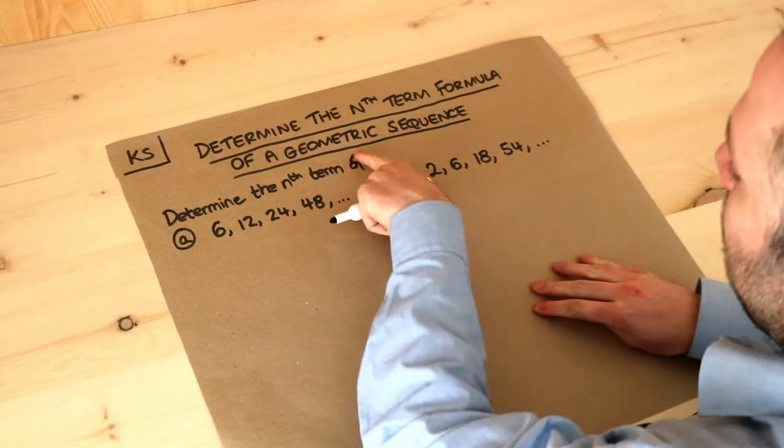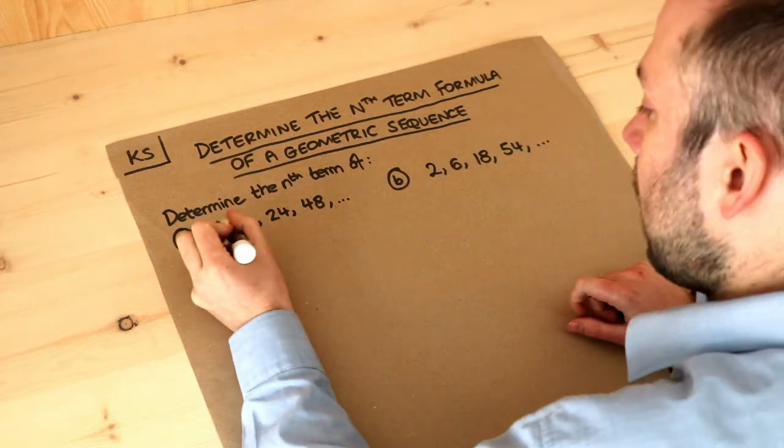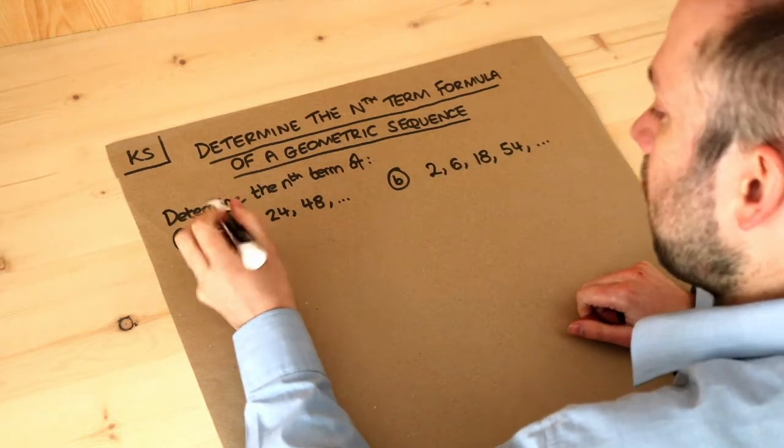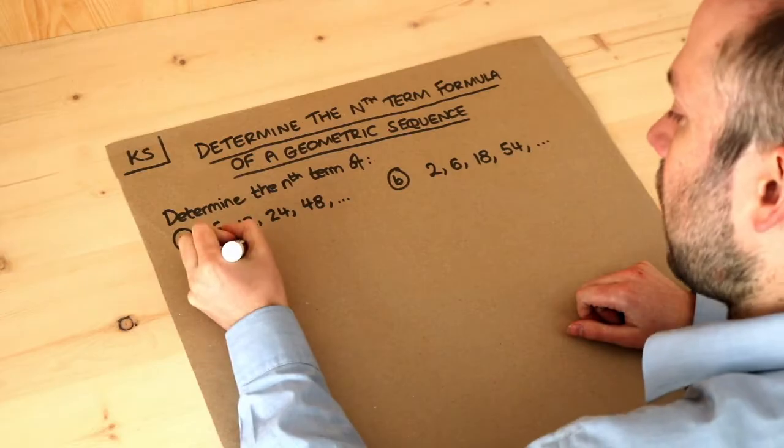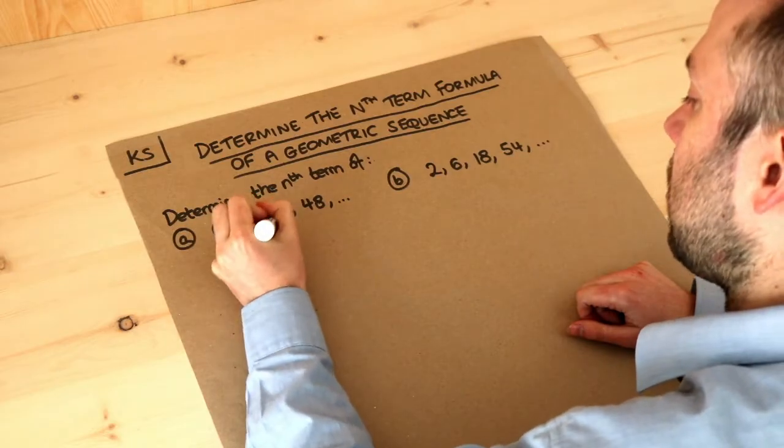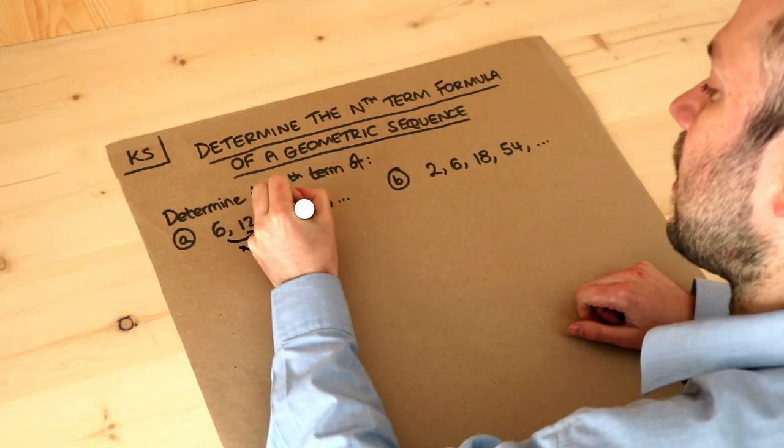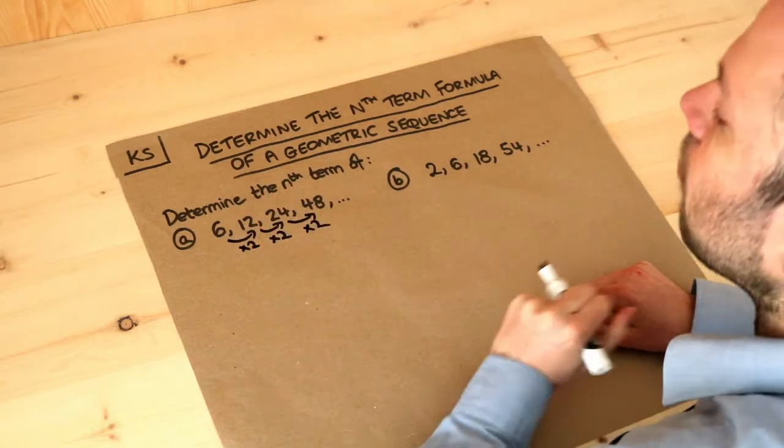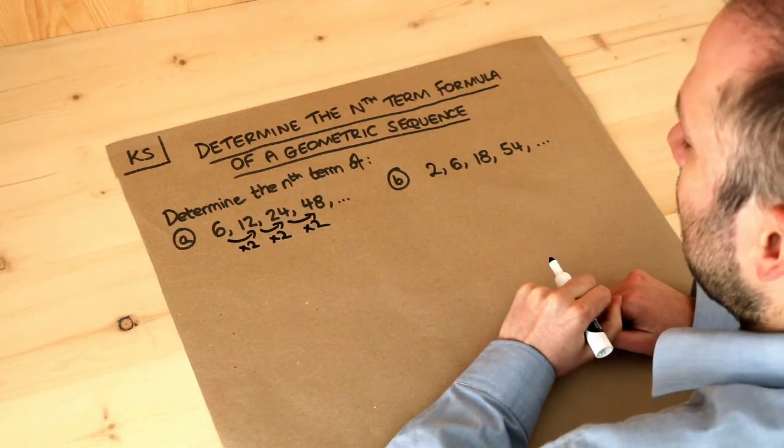What makes a geometric sequence is that we're multiplying by the same value each time. You can see this is doubling each time, times by 2, times by 2. If you were adding or subtracting the same number each time, that's known as an arithmetic sequence, and we look at that in separate videos.